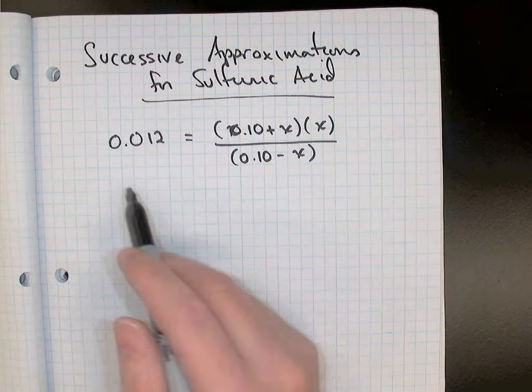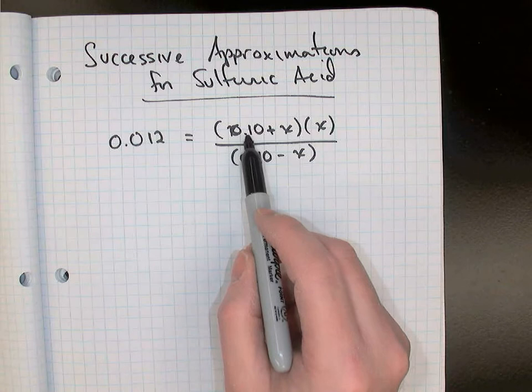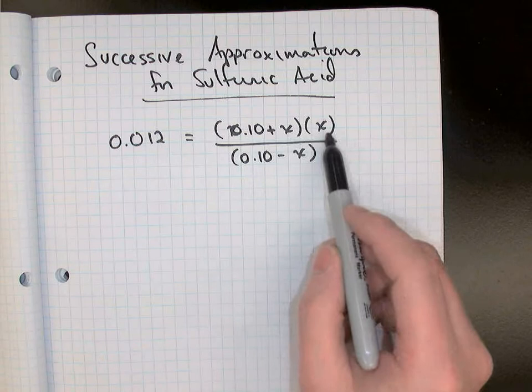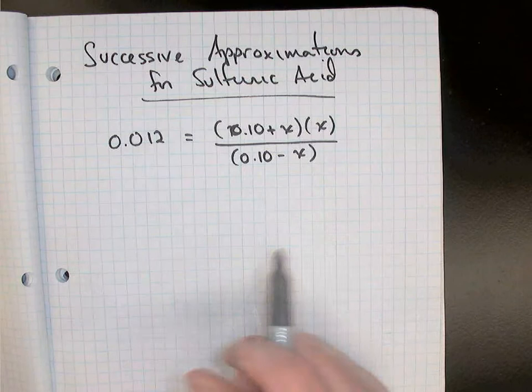At the end of our second step of the dissociation in an earlier problem with sulfuric acid, we ended up with an equation like this: Ka value for step 2 was 0.012, and that was equal to the hydronium concentration which was 0.1 from the first step of the dissociation plus X in the second step, multiplied by the sulfate concentration which was X, divided by the concentration of HSO4 minus which was 0.1 take away X.